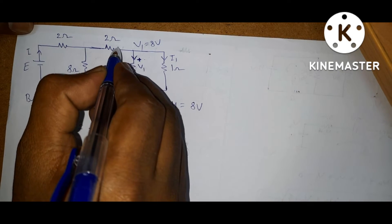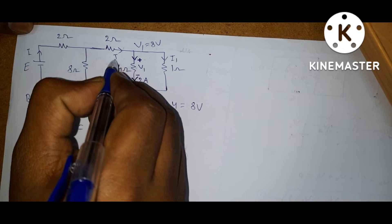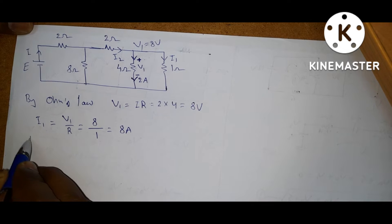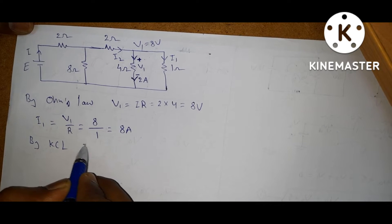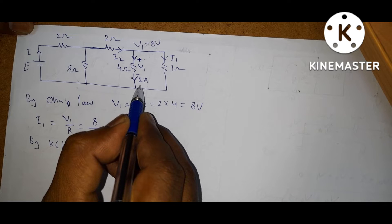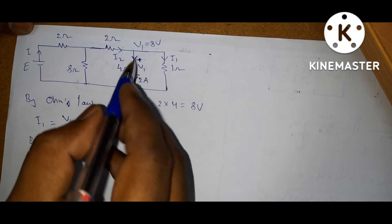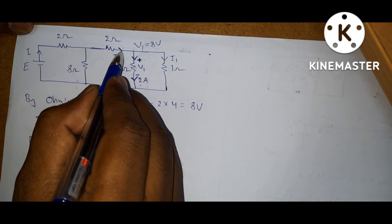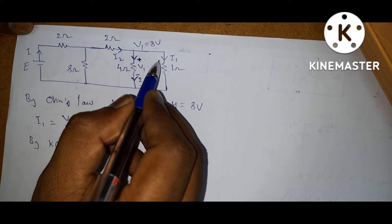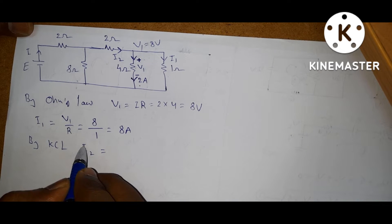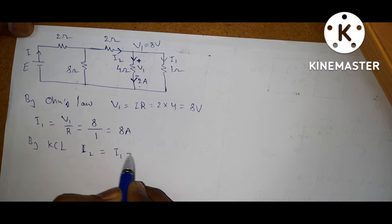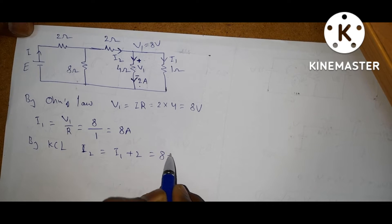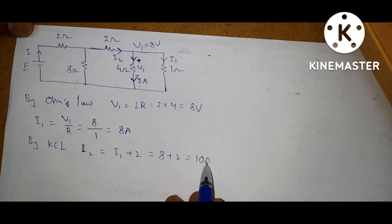Now, the current flowing through the 2 ohm — let it be I2 — by KCL. What is I2? I2 is equal to 2 amps plus I1, because here this is the entering current and these two are leaving currents. According to KCL, entering current equals leaving currents. So I2 is I1 plus 2, which is 8 plus 2, equal to 10 amps.